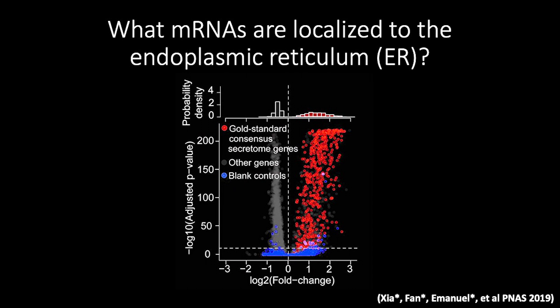As shown in this volcano plot, each point is a gene, and genes in this upper right quadrant are significantly enriched within the ER compared to the non-ER.